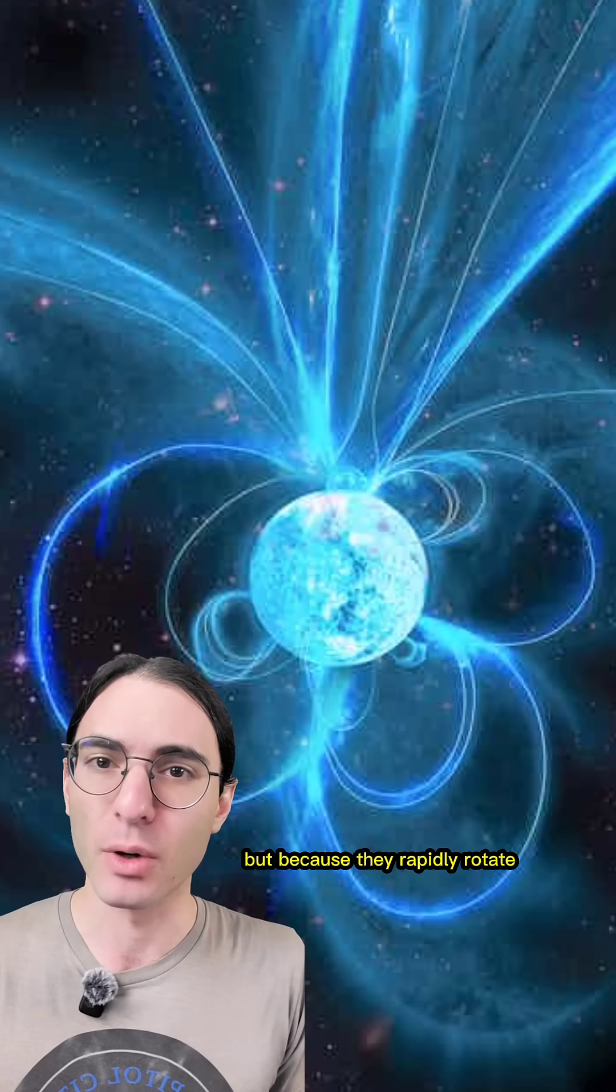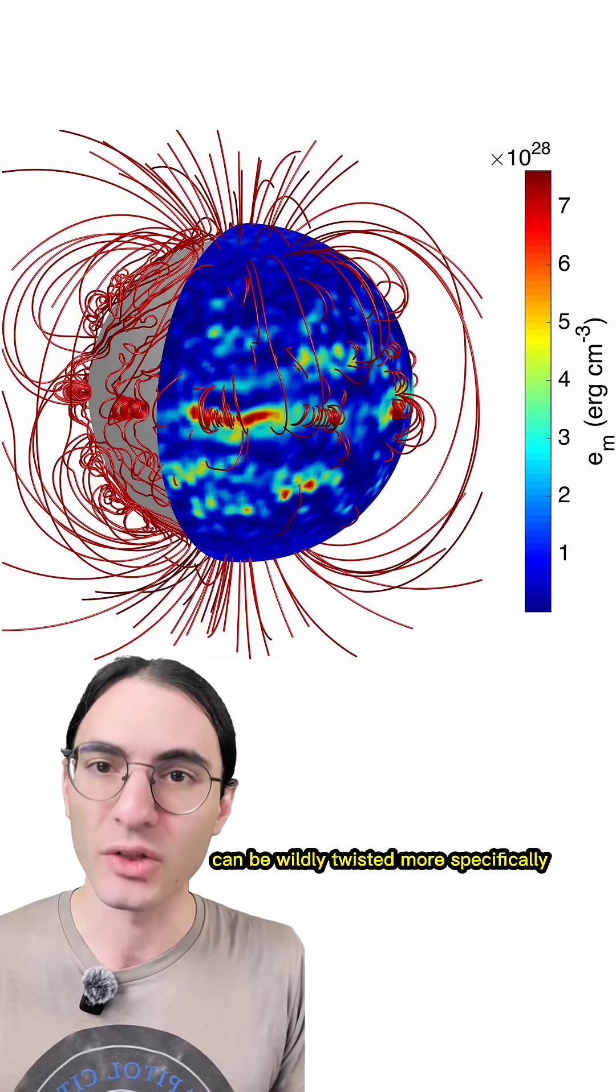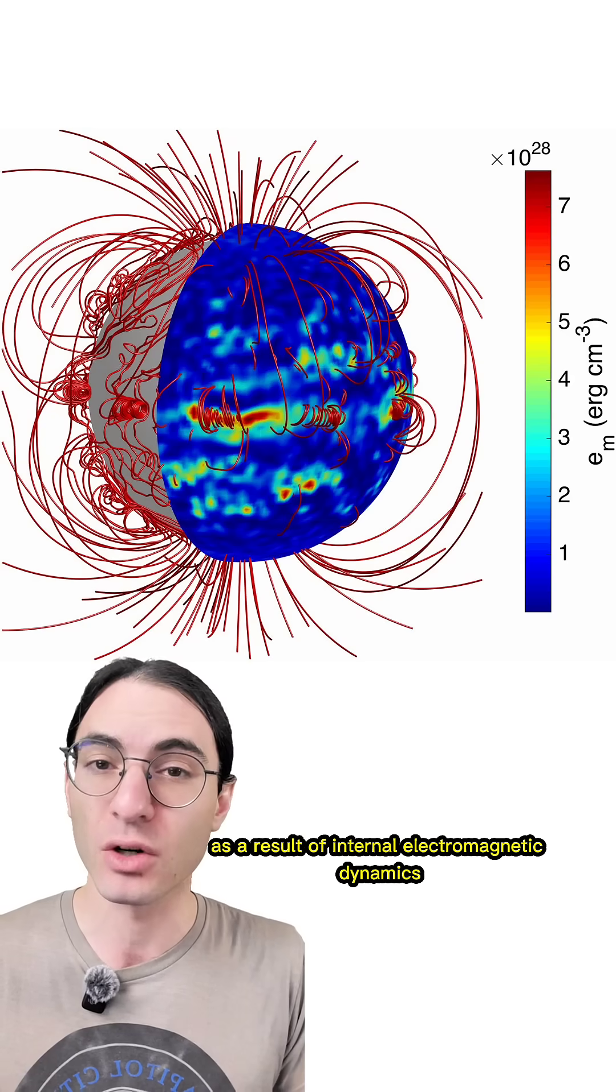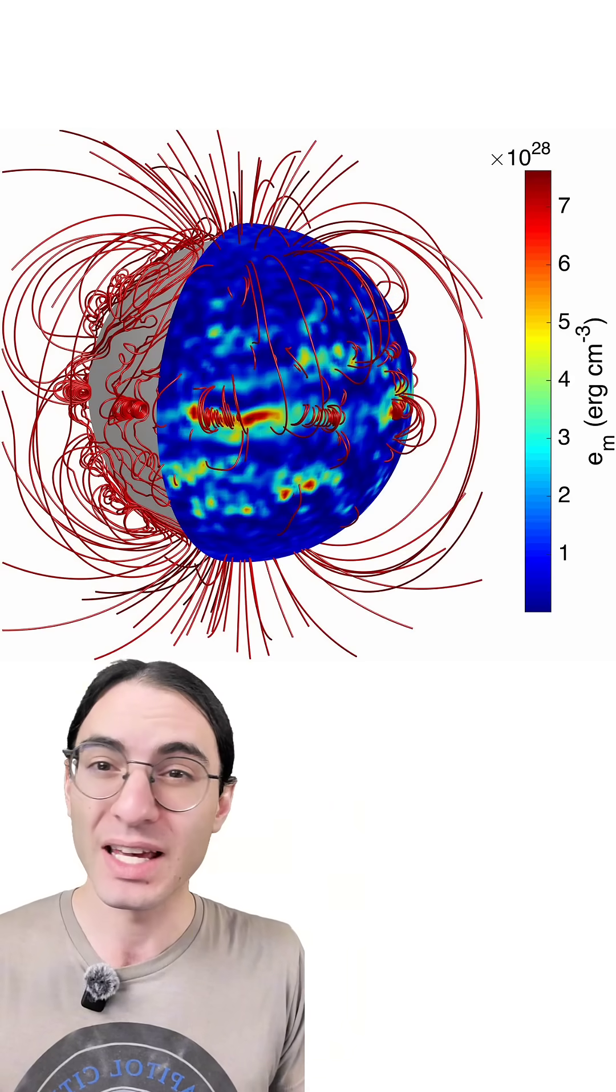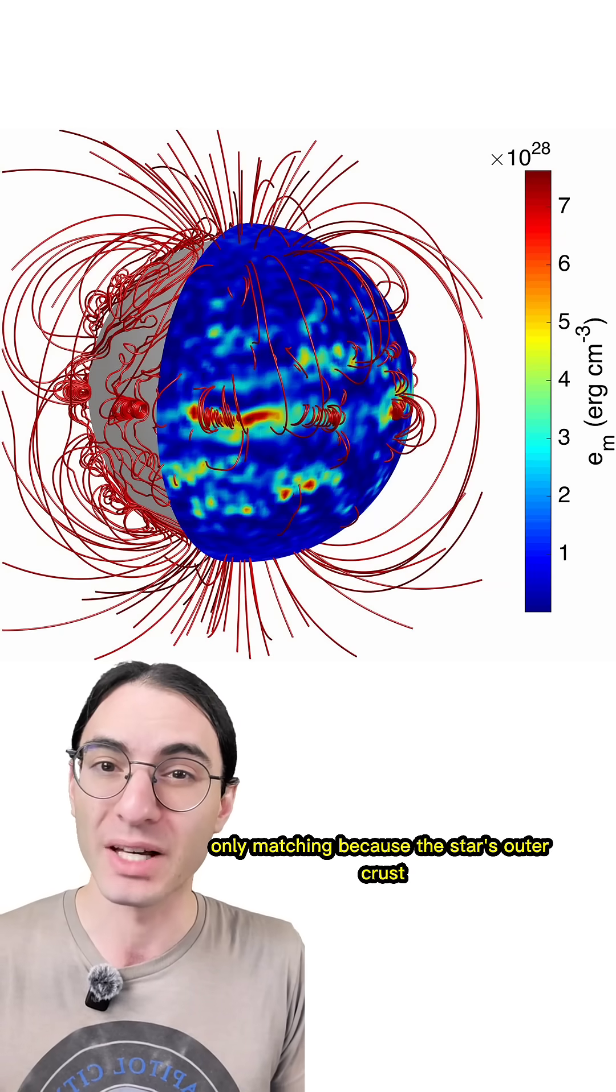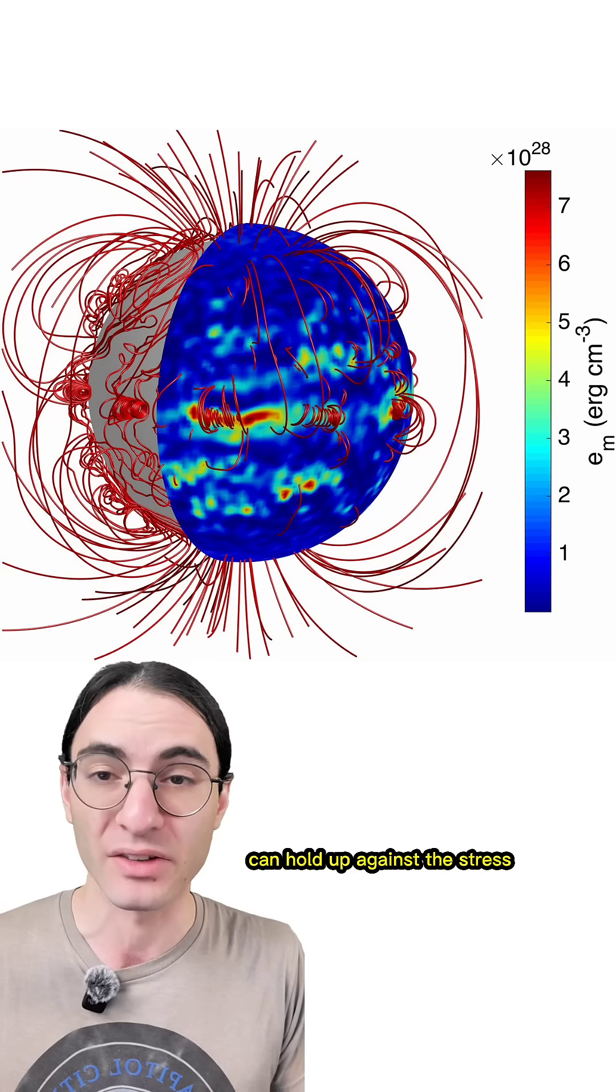But because they rapidly rotate, their internal and external magnetic fields can be wildly twisted. More specifically, it's generally believed that as a result of internal electromagnetic dynamics, the internal and external magnetic fields become highly differentiated, only matching because the star's outer crust can hold up against the stress.